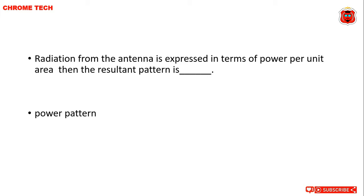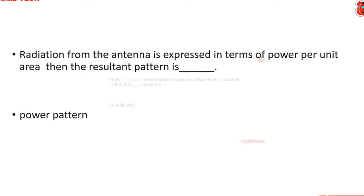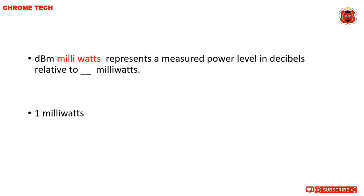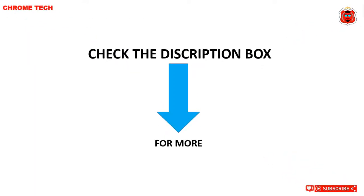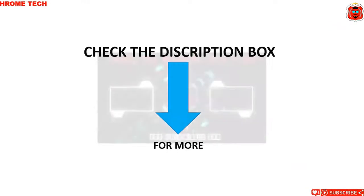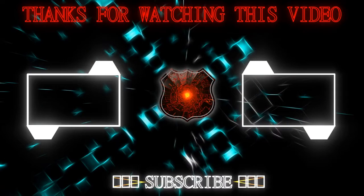Decibel milliwatt (dBm) represents a measured power level in decibels relative to dash. The correct answer is one milliwatt. Thanks for watching, subscribe to the channel ChromTech and check the description box for more questions.